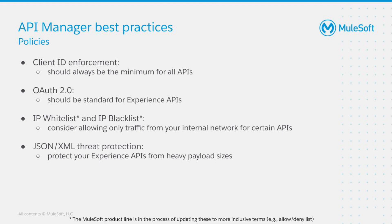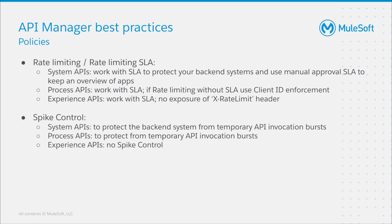For external-facing or experience APIs, OAuth 2.0 is the de facto standard. IP allow listing and deny listing should be considered when you want to allow traffic only from your internal network for certain APIs. JSON or XML threat protection should be applied to your experience APIs to prevent them from being attacked with heavy payload sizes. Rate limiting can be applied both SLA-based and non-SLA-based. For system APIs, we recommend SLA-based rate limiting to protect your backend system, and also use a manual approval approach to keep an overview of which apps are accessing your backend systems. For process APIs, it depends on the use case and requirements, but we recommend the SLA-based approach. If you take the non-SLA-based approach, our recommendation is to apply the Client ID enforcement policy on top to trace who is accessing your process APIs.